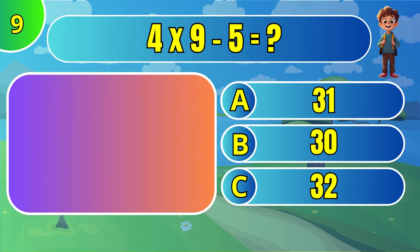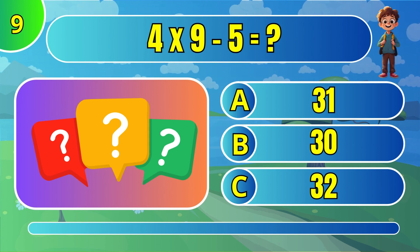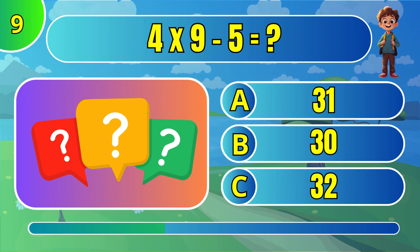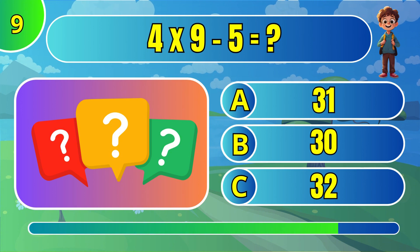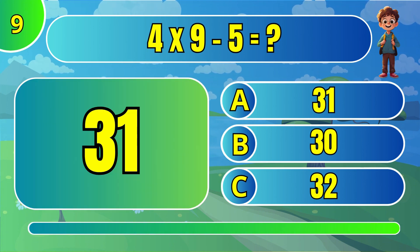What is 4 times 9 minus 5? The answer is C: 31.